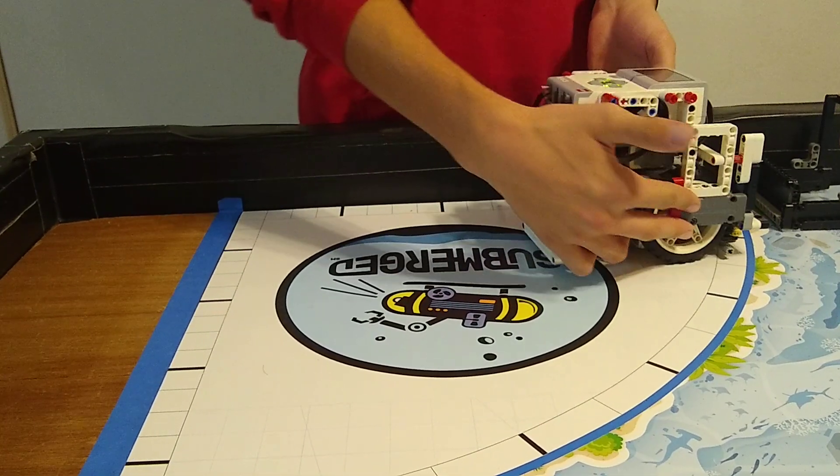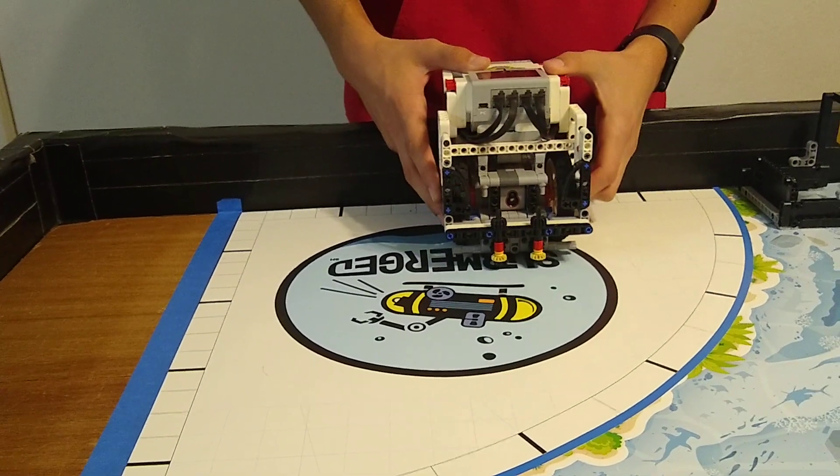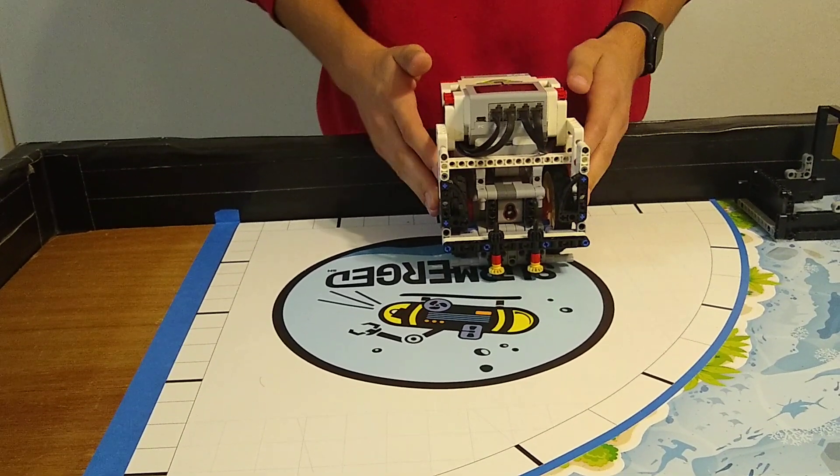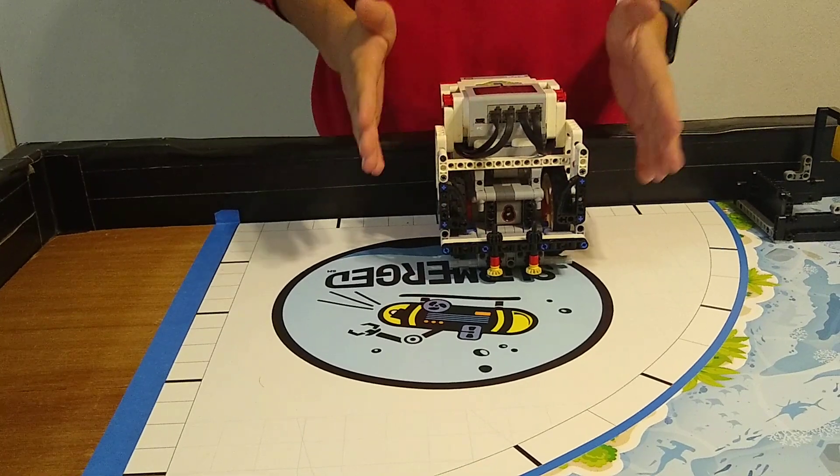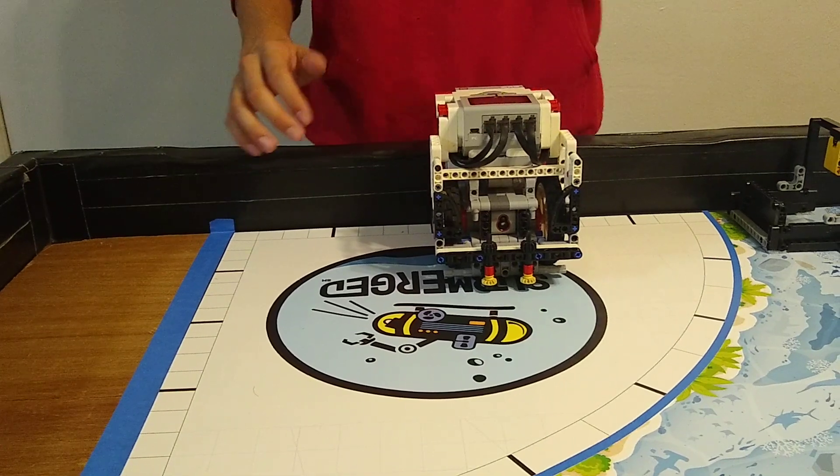When we line it up, we have the flat back of our robot and we put it flat against the back of the board so that it's always facing straight and all of our programs go the exact angle that they're supposed to go.